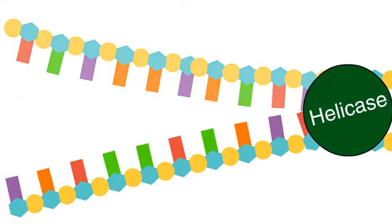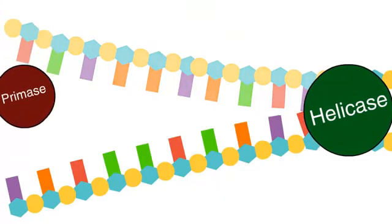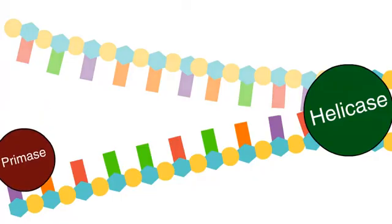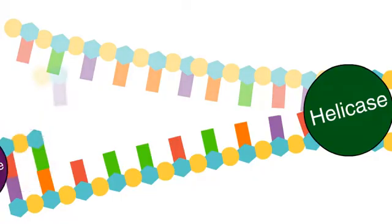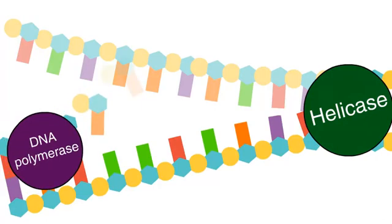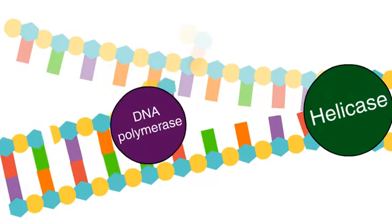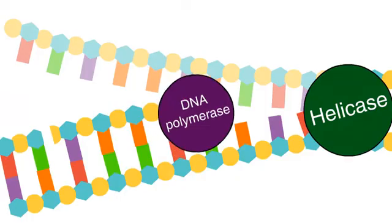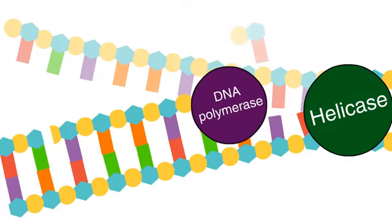Primase initiates the process of making the new strand by adding a small piece of RNA. Then, DNA polymerase adds the new nucleotides to build the new strand of DNA. The RNA is replaced with DNA.